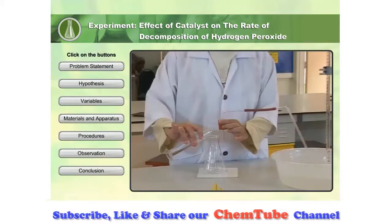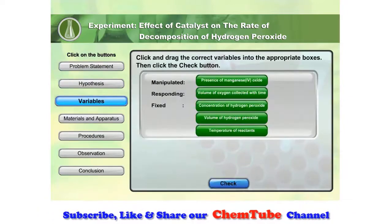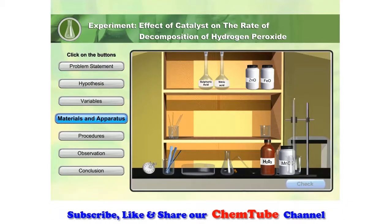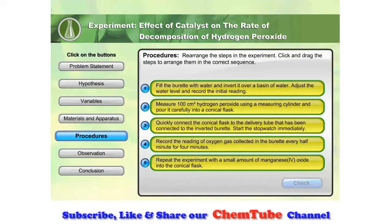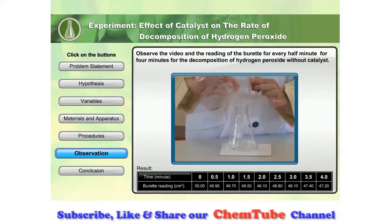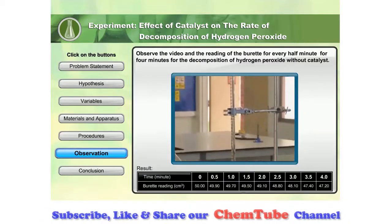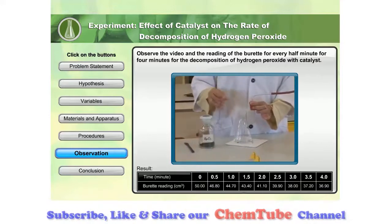Do catalysts affect the rate of reaction? Let's investigate the effect of catalyst on the rate of decomposition of hydrogen peroxide. Will catalyst manganese(IV) oxide affect the rate of decomposition of hydrogen peroxide? These are the apparatus and materials needed for this experiment. Observe the video and the reading of the burette for every half-minute for 4 minutes for the decomposition of hydrogen peroxide without catalyst. Observe the video and the reading of the burette for every half-minute for 4 minutes for the decomposition of hydrogen peroxide with catalyst.